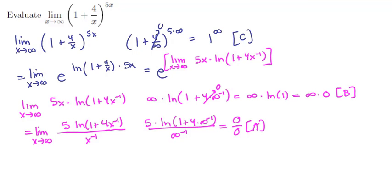If you're type A indeterminate, you can be hit with the L'Hopital stick. So let's apply L'Hopital's rule. We're going to have the limit as x tends to infinity. We'll replace the top by the derivative of the top. That will be 5 comes along for the ride, 1 over 1 plus 4 times x to the minus 1, times the derivative of 4x to the minus 1, which would be negative 4 times x to the minus 2.